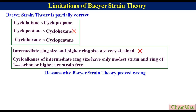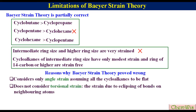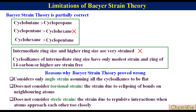These are the reasons why Baeyer Strain Theory proved wrong. It considers only angle strain, assuming all the cycloalkanes to be flat. It does not consider torsional strain, which is the strain due to eclipsing of bonds on the neighboring atoms, and it does not consider steric strain, which is the strain due to repulsive interaction when atoms approach each other too closely.